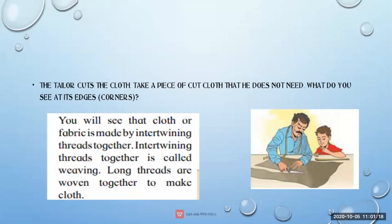Can you see the picture? The tailor cuts the clothes. Take a piece of cut cloth that he does not need. What do you see at its edge? The edge means corner. Clothes or fabric is made by interweaving threads together. Can you see that after cutting the clothes, some threads are coming out from the edge?